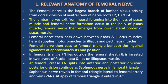The femoral nerve is the largest branch of the lumbar plexus, arising from the dorsal division of ventral rami of nerve roots lumbar second, lumbar third, and lumbar four. The lumbar nerves exit from the neural foramina into the substance of the psoas muscle. Femoral nerve formation occurs in the belly of the psoas muscle, then emerges from the lower lateral border of the psoas muscle. The femoral nerve then passes down between the psoas and iliacus bellies, supplying motor branches to iliacus and pectineus muscle, then passes to the femoral triangle beneath the inguinal ligament at approximately its mid position.